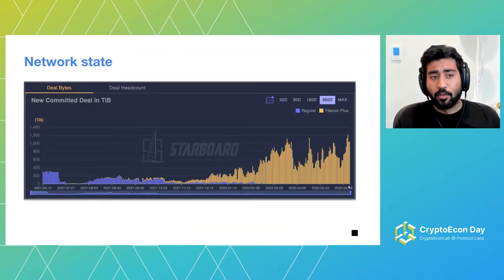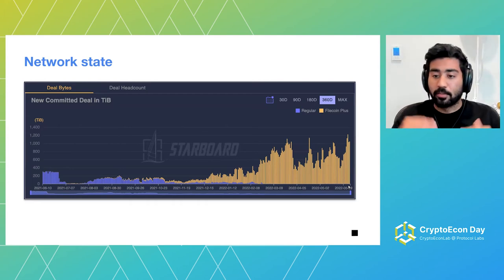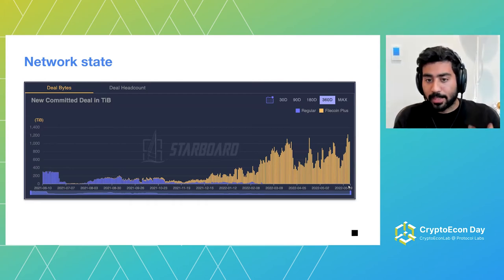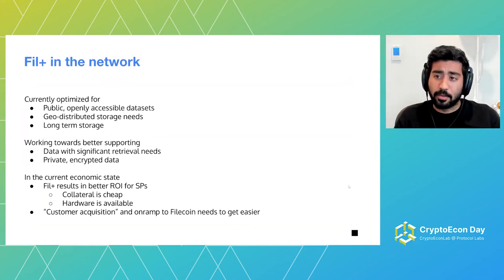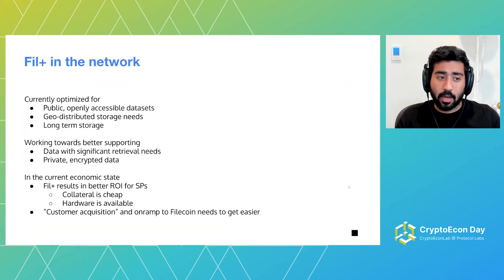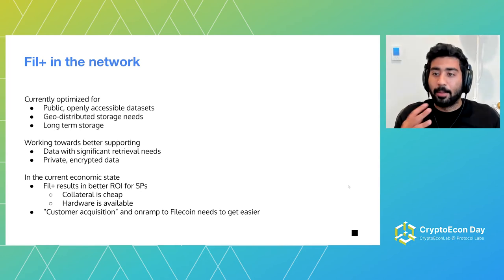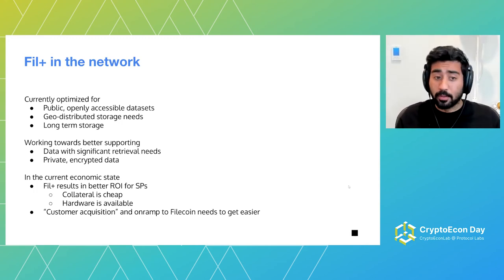In terms of the overall network state, if you look at committed capacity or power in the network — both what could be in deals versus what's not — the presence of Filecoin Plus has grown substantively and has been very important in shaping the stability of the network, ensuring it continues to be useful and deliver value. Currently the system is optimized for more public, open data sets that can be geographically distributed, and more optimized for long-term storage. We're working towards better supporting enterprise needs, private data needs, and data that needs to be retrieved more frequently.